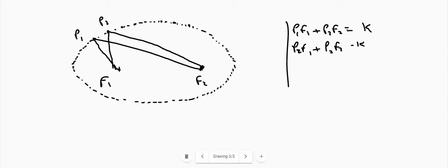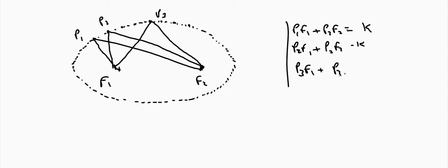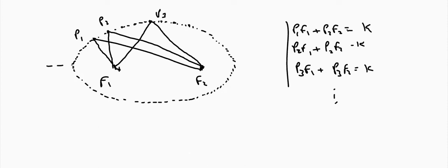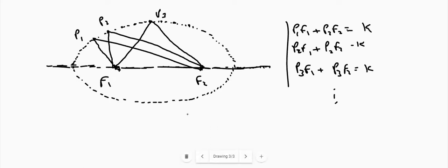There is another point to note: the line passing through the focus is known as the axis. There will be two axes — one is the major axis and another will be the minor axis.